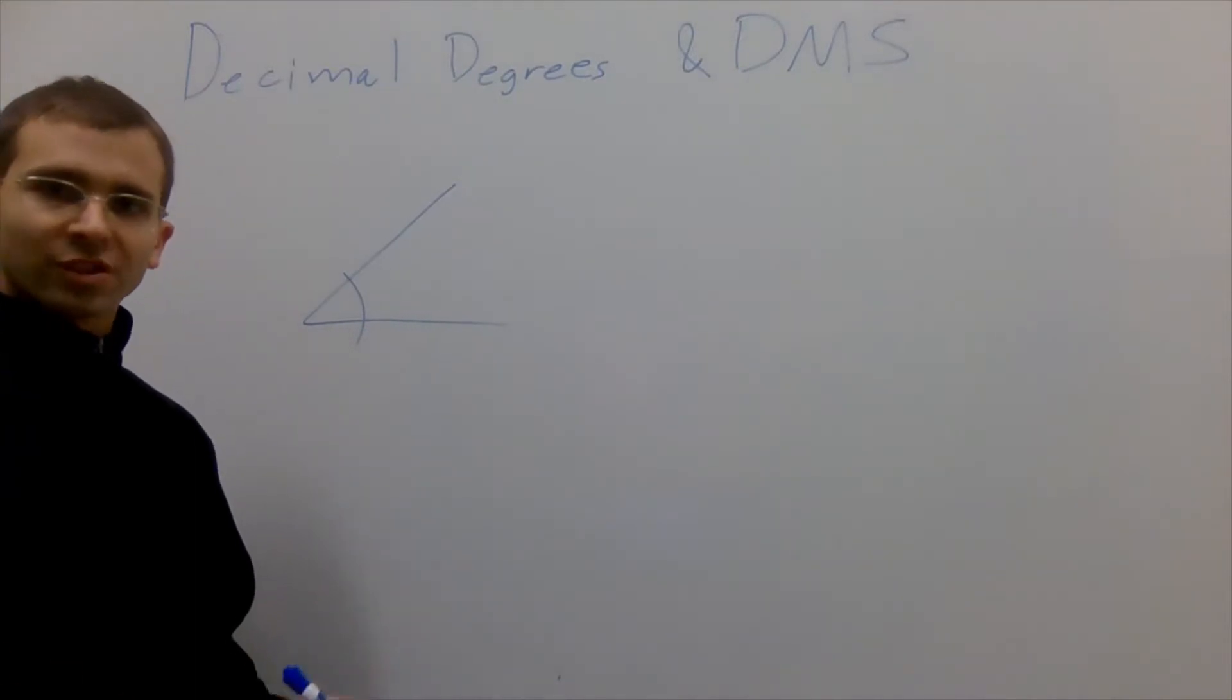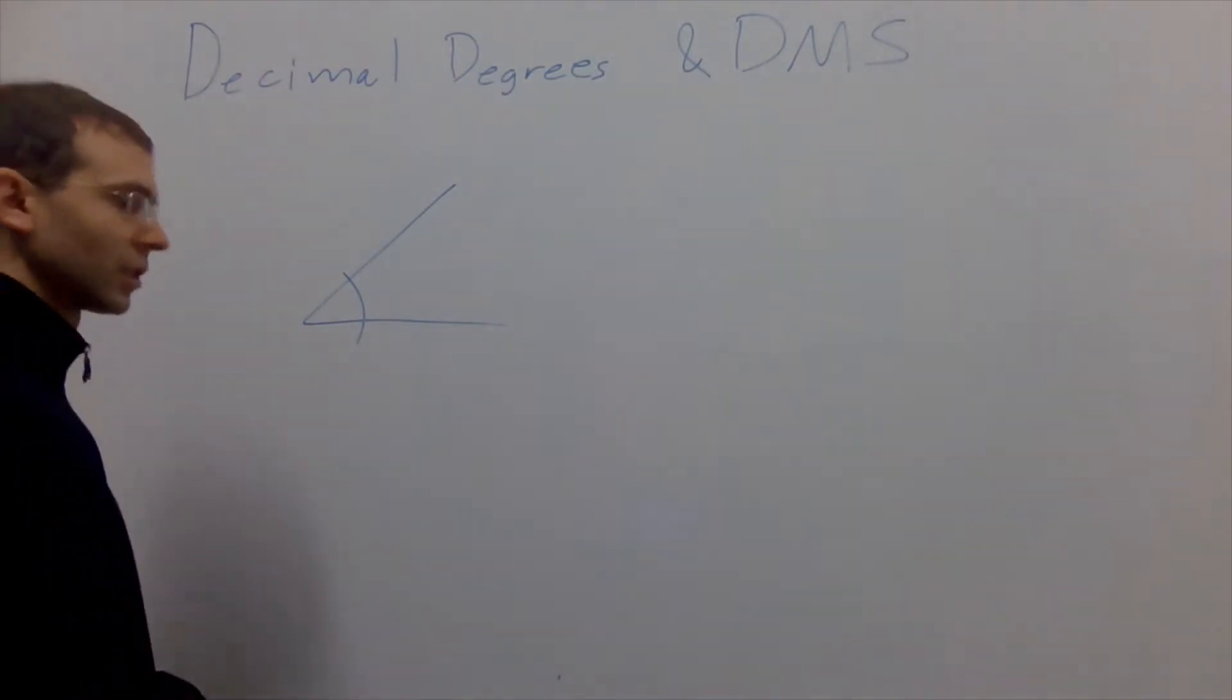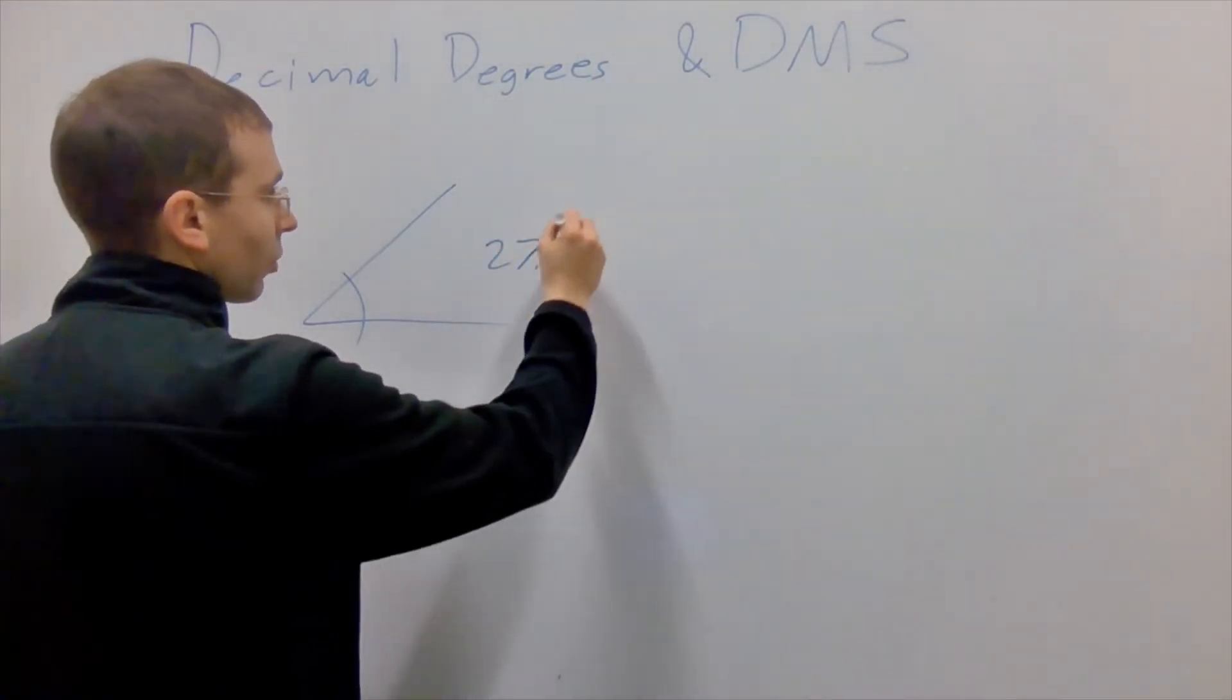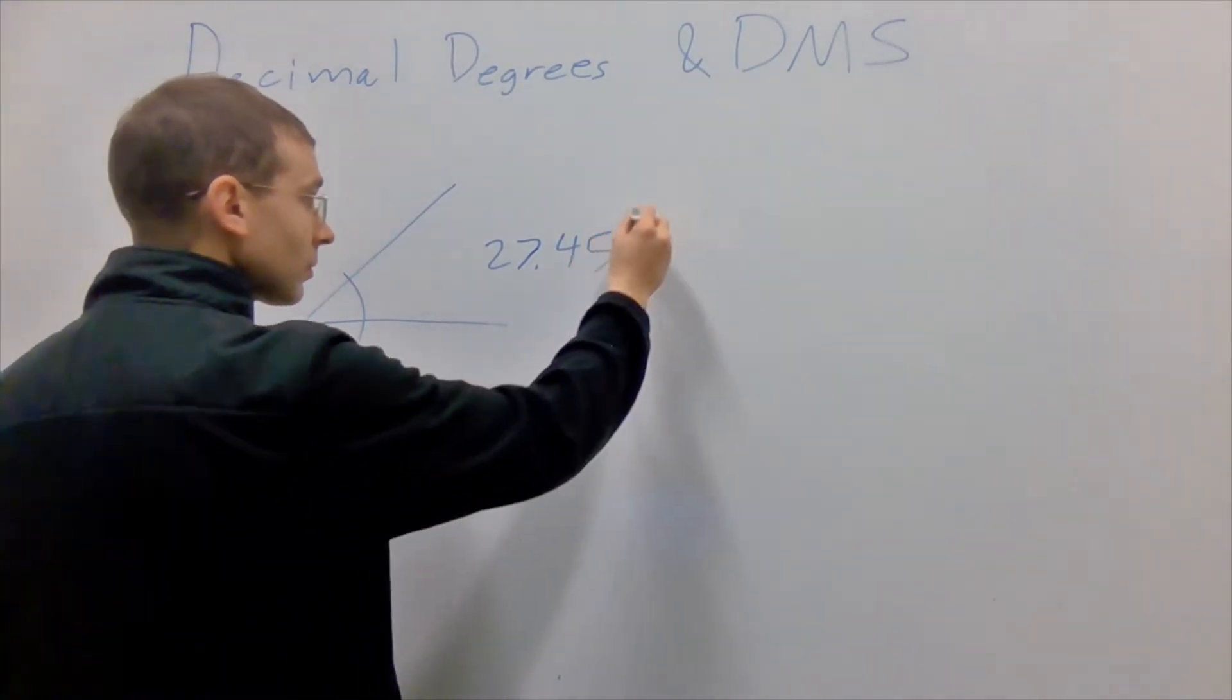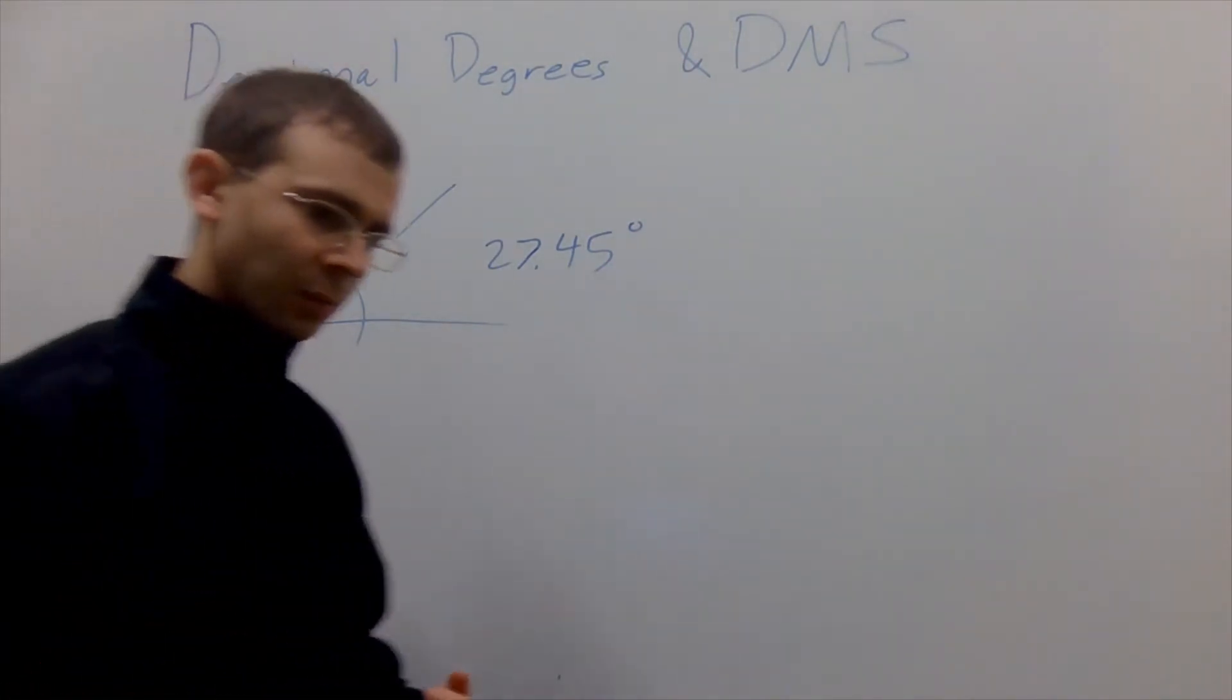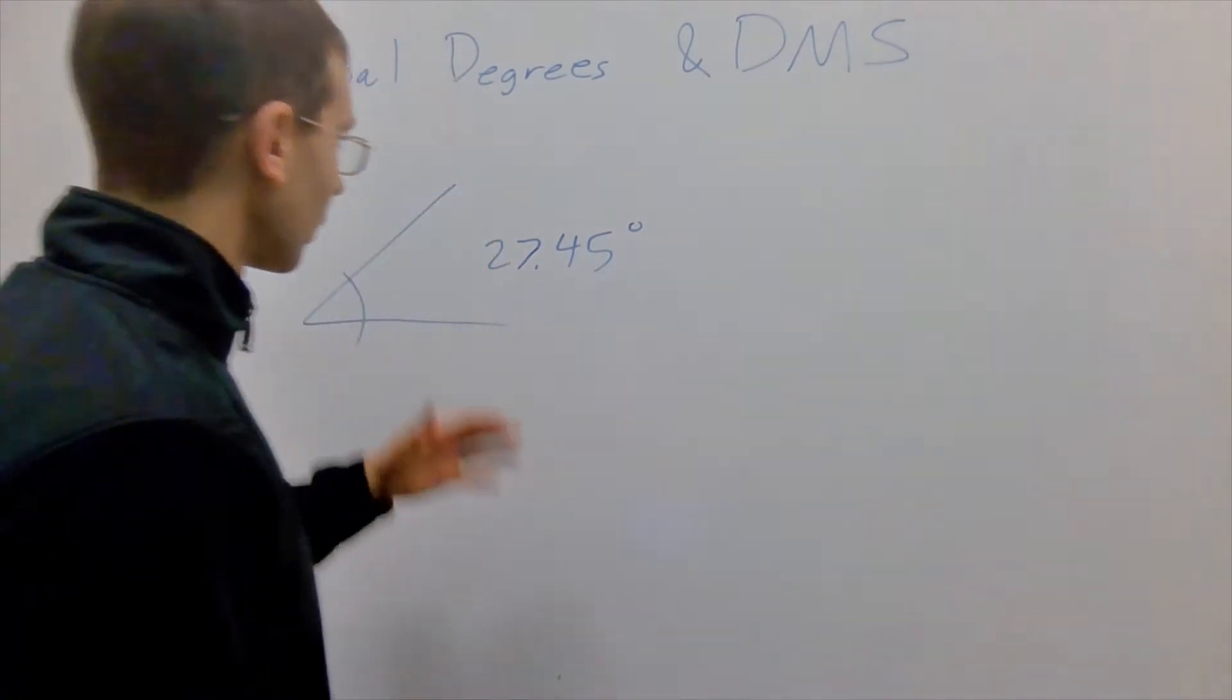We often measure angles with enough precision that we need to think about a fraction of a degree. So say for instance if we knew that this angle here was 27.45 degrees. This is a nice precise number and our calculators can cope with this just fine. We can do trigonometric ratios using this and so forth.